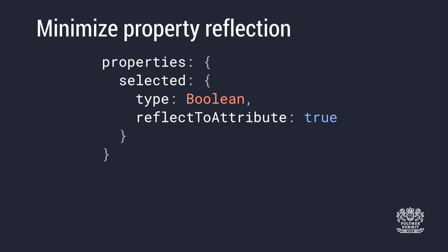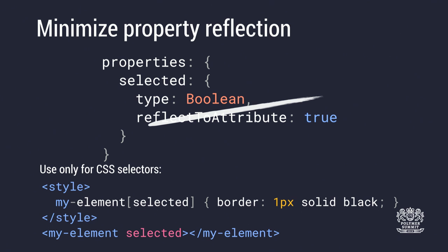Please don't use reflectToAttribute unless you have to. If you have a large JavaScript object or array property, every change to it gets serialized back from the property to an HTML string — that's a potential source of performance issues. The only valid reason to use reflectToAttribute is for styling: if you want to style your element based on whether an attribute is applied, such as putting a border around a selected element. Only use it for styling purposes.